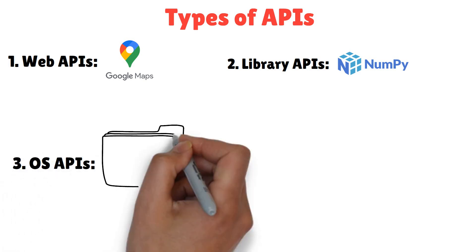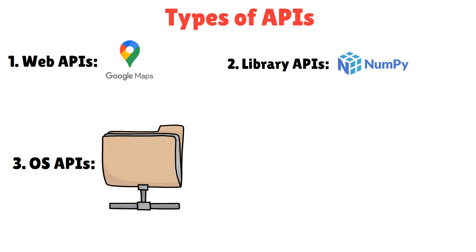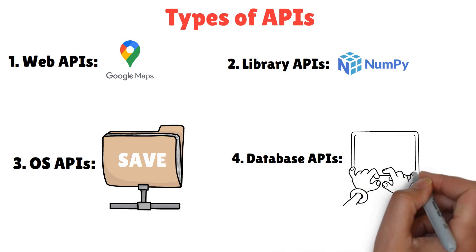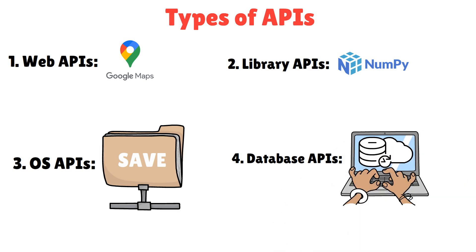OS APIs. Let's apps interact with the operating system. Think of saving a file. Database APIs. These help apps fetch or update data from a database.